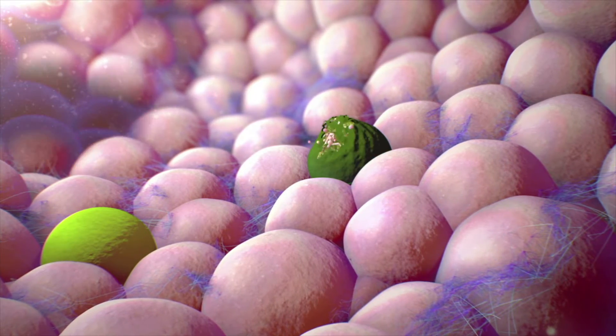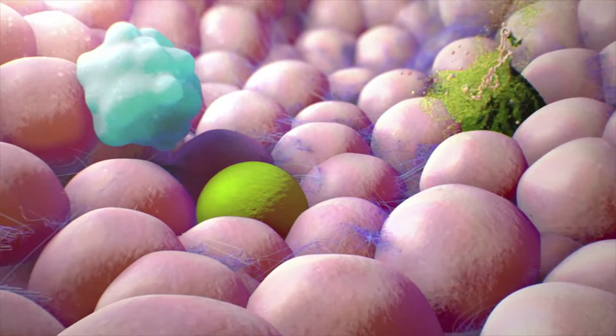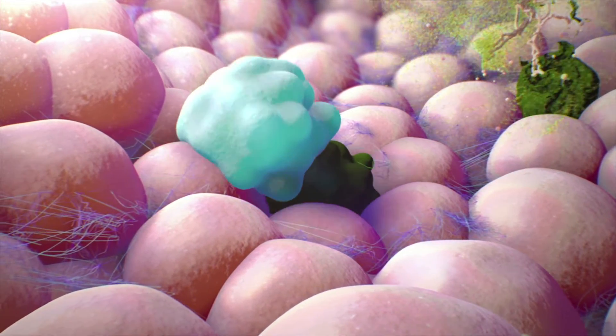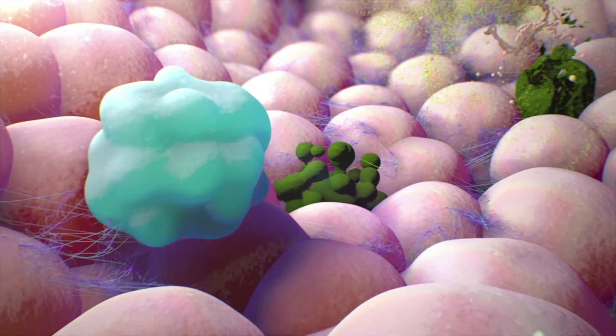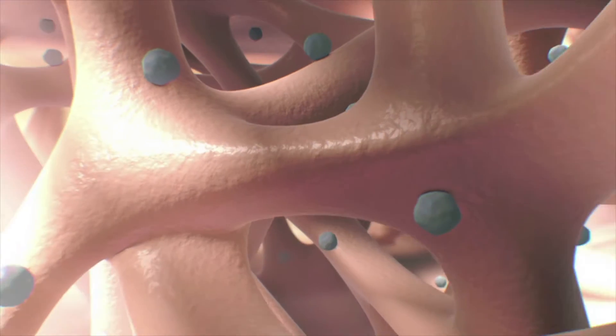Our immune system reacts slowly to new infections and much more quickly to infections it has seen before. Its memory resides in white blood cells called memory T cells, held for years in a dormant state.